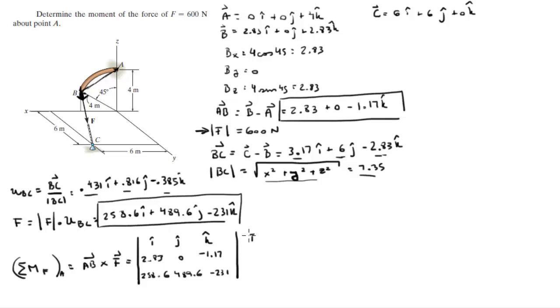You redraw your first and second column: 2.83, 0, 258.6, 489.6, and then you do your positive diagonals which come out to be I times 0 times 231 is 0, negative 1.17 times 258 times J is negative 302.6 J, 2.83 times 489.6 times K is positive 1385.6 K.